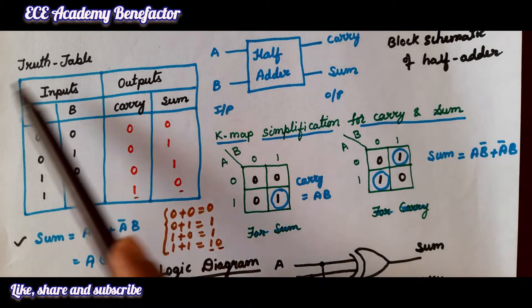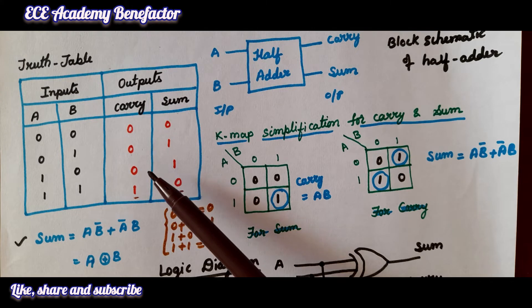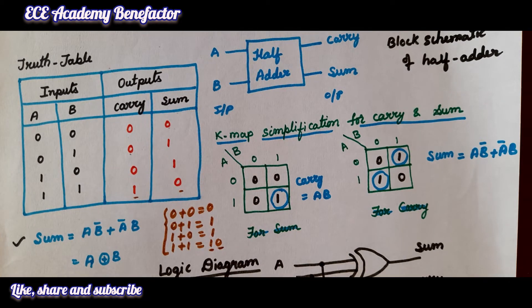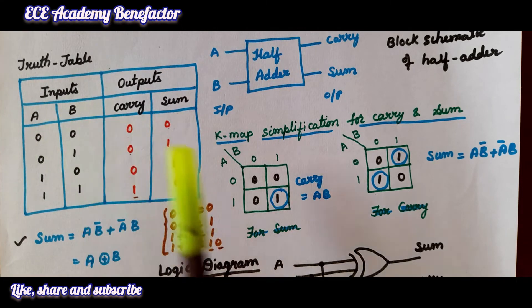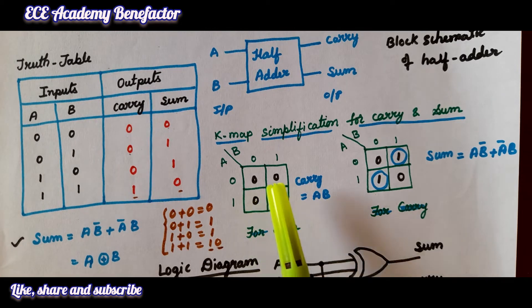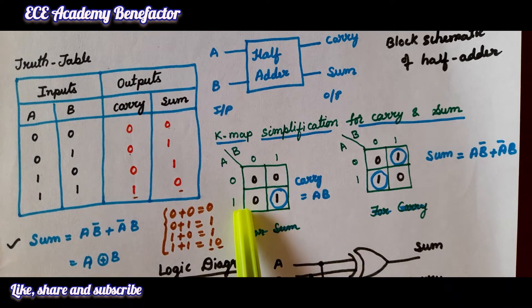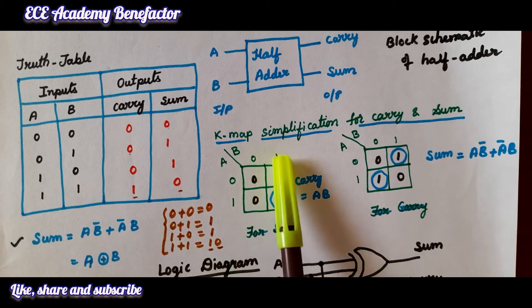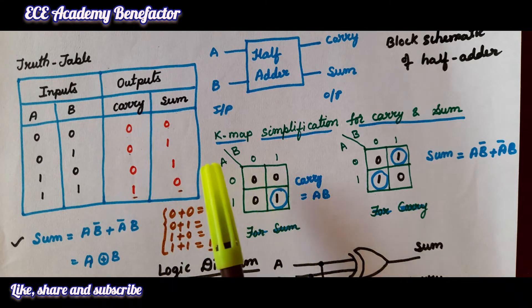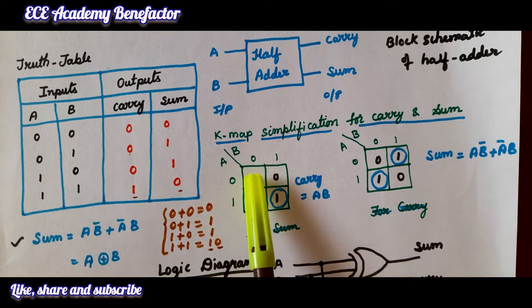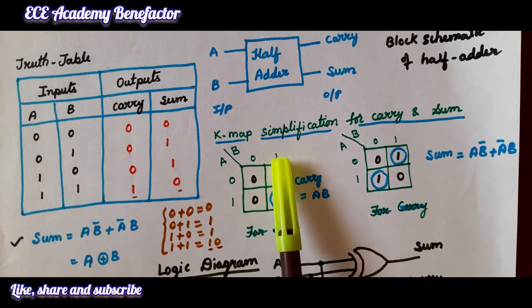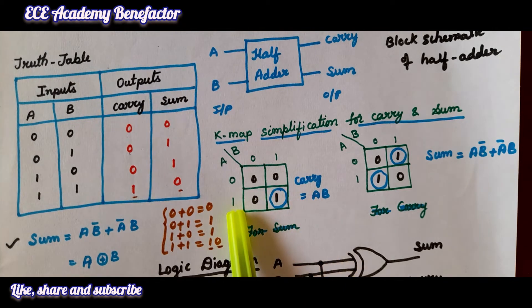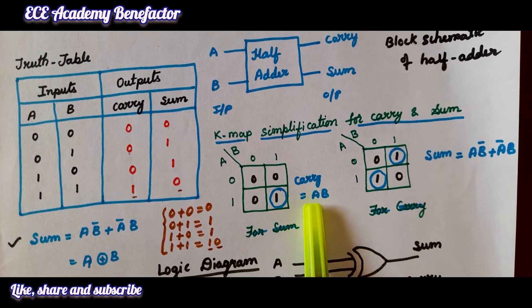After having the truth table, we need to draw two K-maps for the two output variables — one for carry and one for sum. For the carry K-map, it is a two-variable K-map with inputs A and B. We fill in the values 0, 0, 0, 1 from the carry column. There is a single 1, which we circle. The common variables for that cell are A and B, so the carry output expression is A·B.